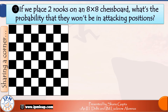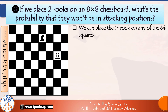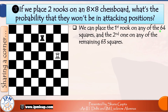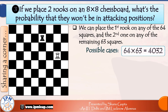Now here comes a bonus question. It was based on the chessboard theme so I decided to put it in the same video. The question is: if we place two rooks on an 8×8 chessboard, what is the probability that they won't be in attacking positions? For those who are not fond of chess, a rook can attack anything that comes in its way horizontally across or vertically across. Given there are 64 total squares, the two rooks can be placed on any two of them — the first rook on any of the 64 squares and the second on any of the remaining 63 squares. Total possible cases are 64×63, which equates to 4032.